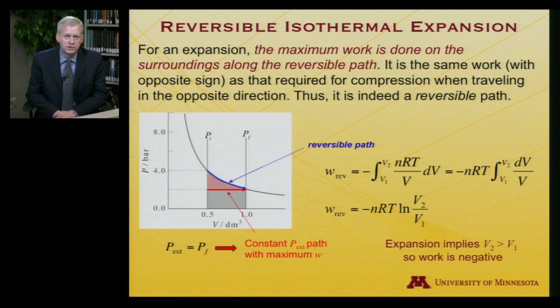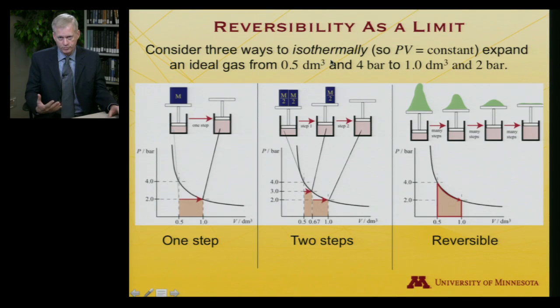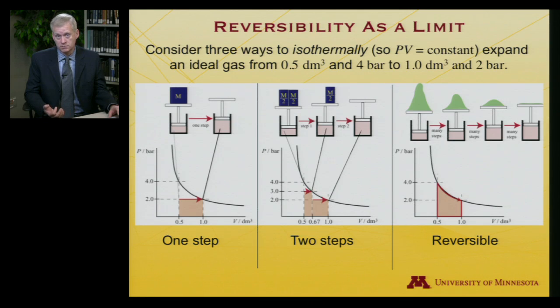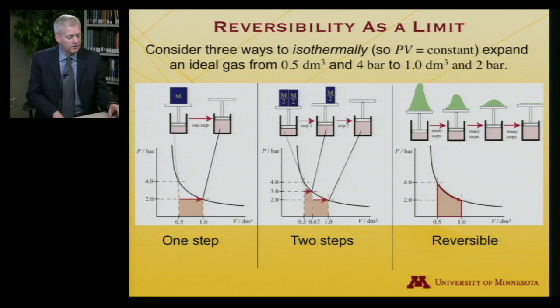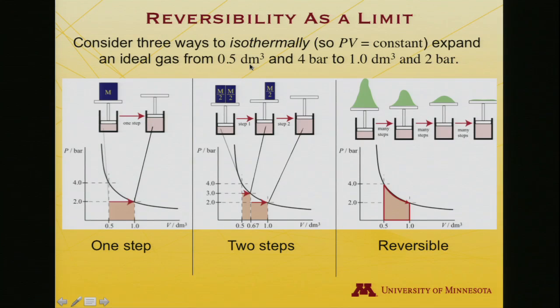Let's pause to look at different PV expansions and compressions and appreciate how they differ in terms of work. I want to cement the difference between a reversible and a non-reversible path. We've been discussing isothermal processes because for an ideal gas PV = nRT — if temperature is constant, PV is constant. To illustrate: imagine expanding an ideal gas from half a liter at 4 bar to 1 liter at 2 bar.